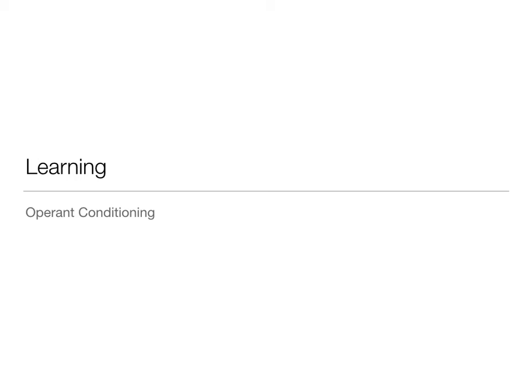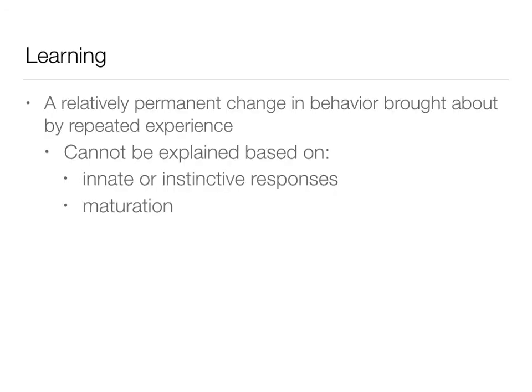Dr. Atchison here and we are talking about operant conditioning, which is again a kind of learning. As we said in the last lecture, learning is a permanent change relatively in a behavior that's brought about by repeated experience. This can't be due to innate or instinctive processes and is not part of maturation.